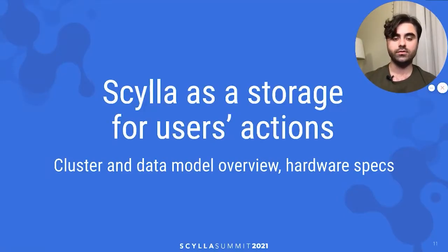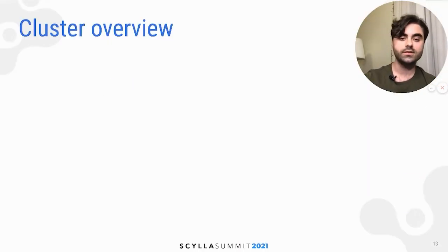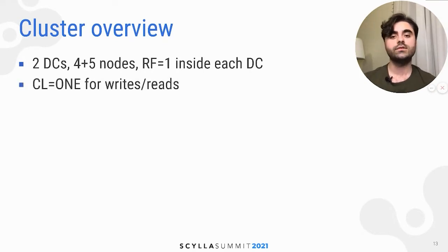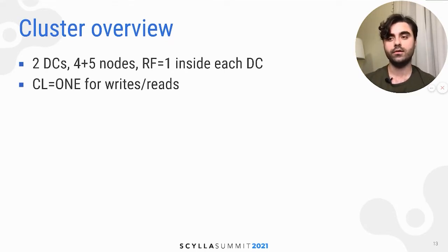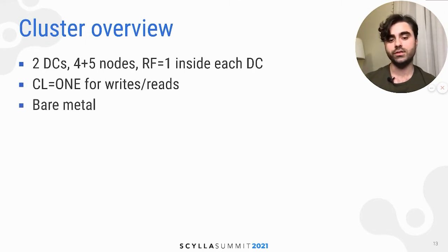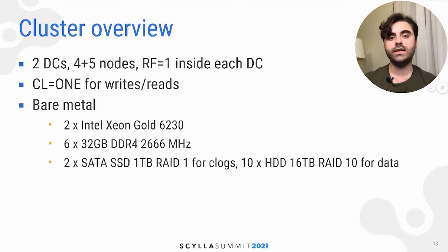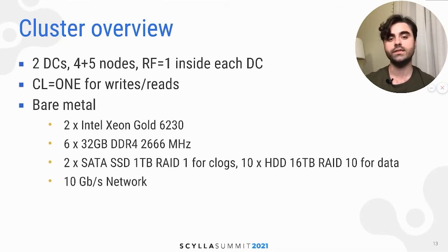We decided to go with Scylla. Currently we have two data centers — four Scylla nodes in the first one and five Scylla nodes in the second one — with replication factor set to one inside each DC. We use a consistency level of one for both writes and reads because we want to remain available if one data center goes down, and we are okay to serve inconsistent reads for a short period of time. We run Scylla on bare metal machines packed with two Intel Xeon 6230s, 192 gigabytes of RAM, two SATA SSDs of one terabyte in RAID 1 for commit logs, and 10 large HDDs of 16 terabytes in RAID 10 for data. All nodes are connected with a 10-gigabit network.